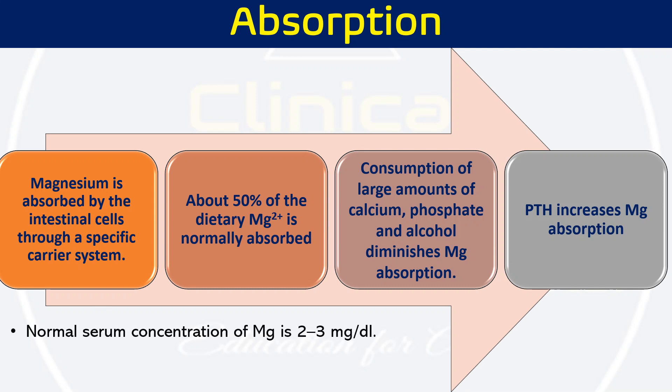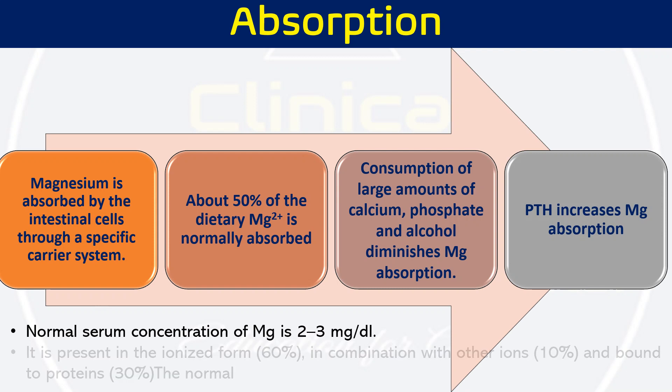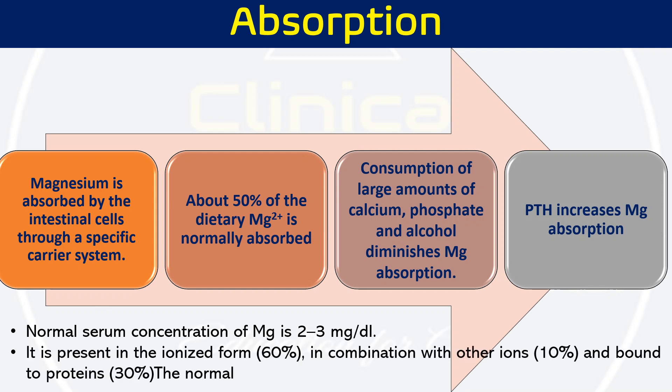The normal serum concentration of magnesium is roughly 2 to 3 mg per dL. It is present in ionized form in 60% of cases, combined with other ions in 10% of cases, and bound with proteins in 30% of cases.